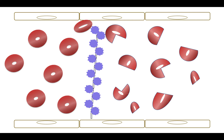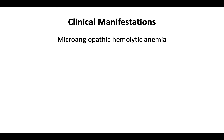This summarizes the pathophysiologic changes that lead to TTP. Now that we understand the underlying mechanisms, let's relate them to the clinical manifestations. The primary manifestation is microangiopathic hemolytic anemia, meaning hemolysis occurring in small blood vessels as demonstrated by the presence of schistocytes. The second most common manifestation, due to platelet consumption and fibrin-rich microthrombi, is thrombocytopenia.